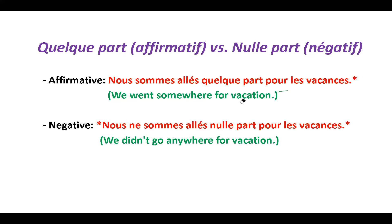Similarly, 'nulle part' (nowhere) also follows the same pattern in passé composé. For example, 'nous sommes allés quelque part pour les vacances' — we went somewhere for vacation. Negation: 'nous ne sommes allés nulle part pour les vacances' — we didn't go anywhere for vacation. Both 'personne' and 'nulle part' are placed after the past participle. In all other cases, the negation element goes between the auxiliary verb and the past participle.